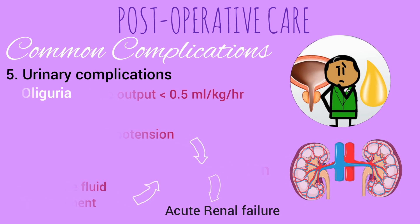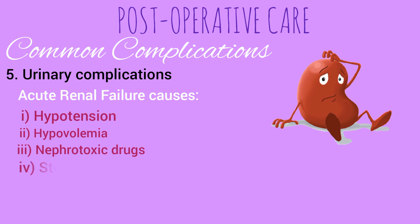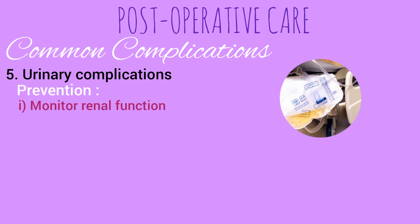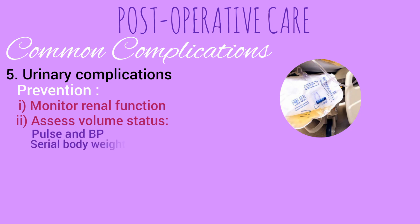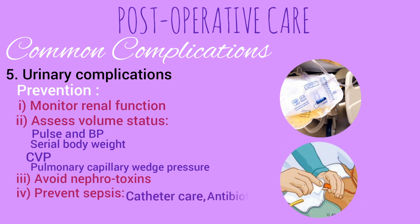Some common causes of acute renal failure are hypotension, hypovolemia, nephrotoxic drugs, steroids, and ureteric injury. Urinary complications can be prevented by monitoring renal function, assessing volume status by monitoring pulse, blood pressure, serial body weight, central venous pressure, and pulmonary capillary wedge pressure. Nephrotoxic drugs should be avoided, sepsis should be prevented by catheter care or antibiotic administration, and in case of urinary retention, diuretics can be helpful.